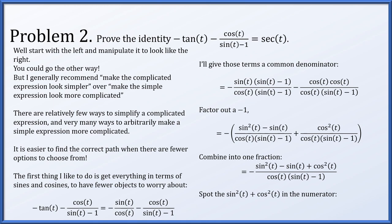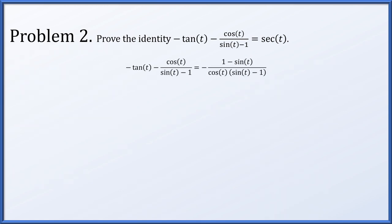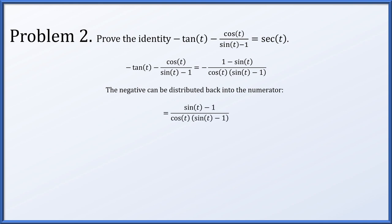In the numerator we have a sine squared t plus cos squared t, which we can replace with 1 — that's our standard Pythagorean identity. So what we have is negative (1 minus sin t) over cos t times (sin t minus 1). We're trying to manipulate this to look like secant of t. That negative can be redistributed back into the numerator to give us (sin t minus 1) over cos t times (sin t minus 1). We have a shared factor of (sin t minus 1) that we can cancel, leaving 1 over cos t, which by definition is exactly the secant of t.